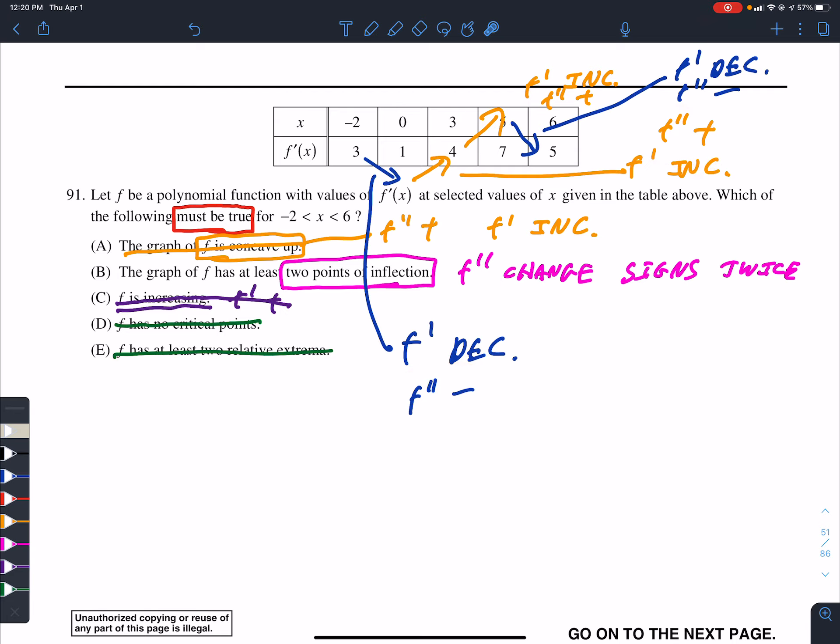Right? Now, from here, we see the second derivative was positive. And in this region, at some point, the second derivative had to be negative. So, if it was positive at some point between there and negative at some point between there, at some point it had to change signs. So, there's my second point of inflection. So, the answer is B.